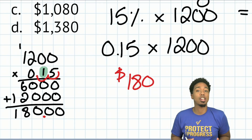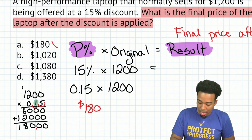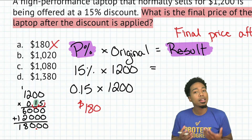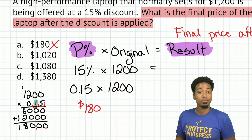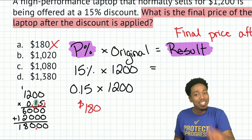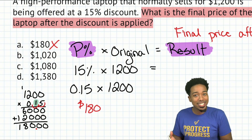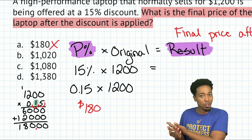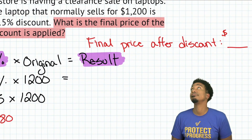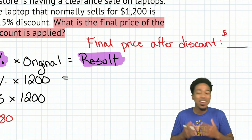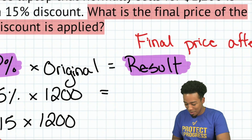A lot of folks will get really excited that they calculated the 15% and got $180, and they'll pick answer A — but A is actually wrong. Why? Because what does that $180 represent? It represents the amount of the discount. We plugged in 15%, the percentage of the discount, so the result of $180 is the amount of the discount. That's not what we were looking for.